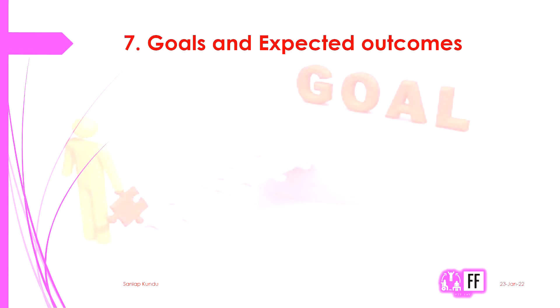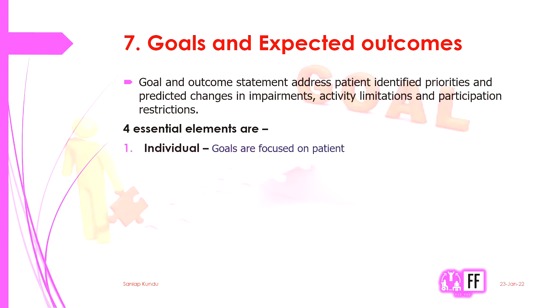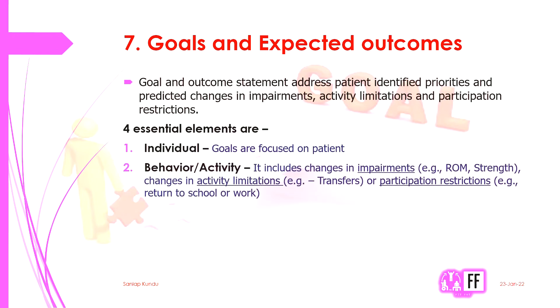Goals and expected outcomes address patient-identified priorities and predicted changes in impairments, activity limitations, and participation restrictions. There are four essential elements: first is the individual — goals are directed mainly on patient behavior or activity. This includes changes in impairments such as range of motion and muscle strength, changes in activity limitations such as transfer goals, or participation restrictions such as return to work or return to school.